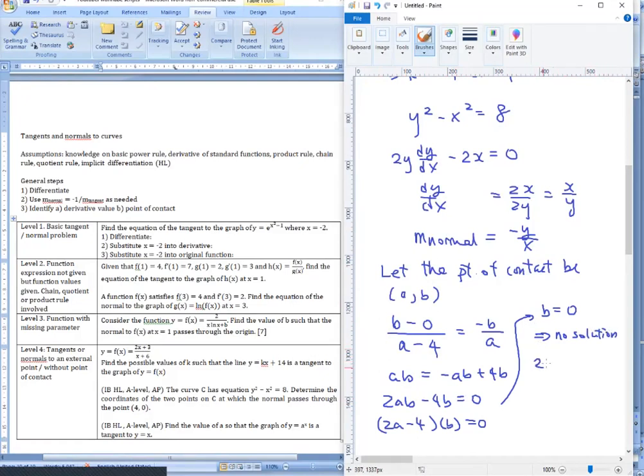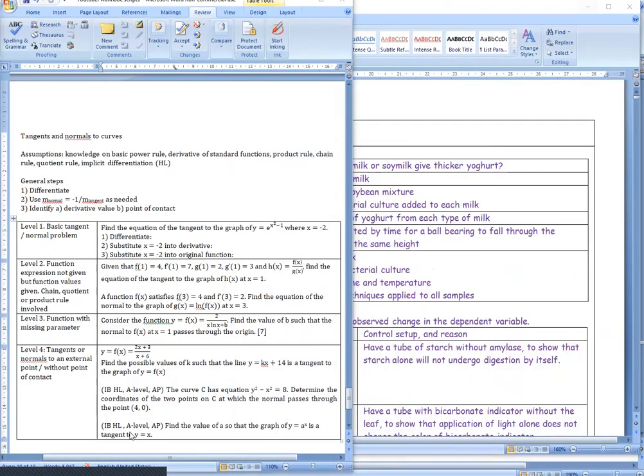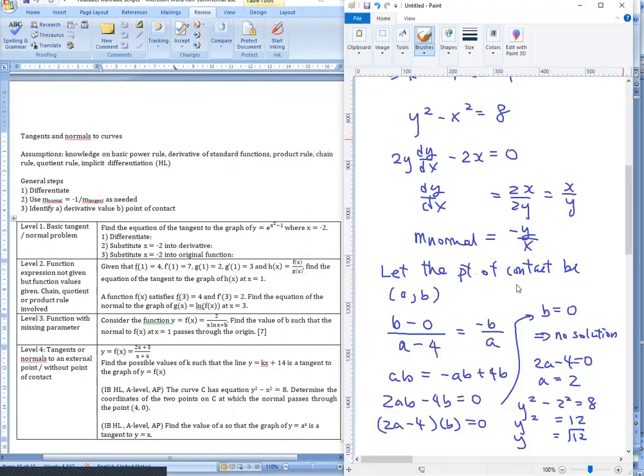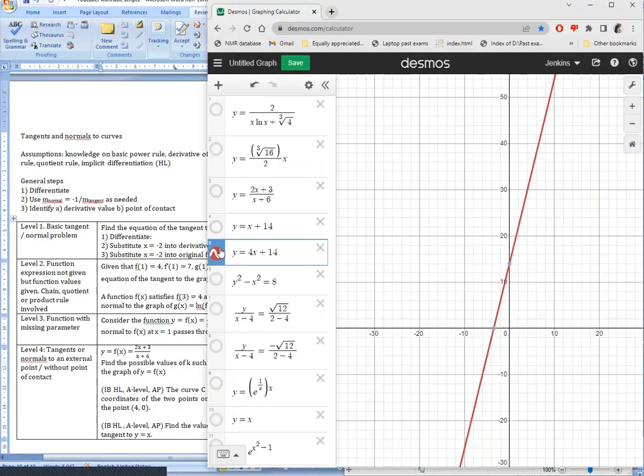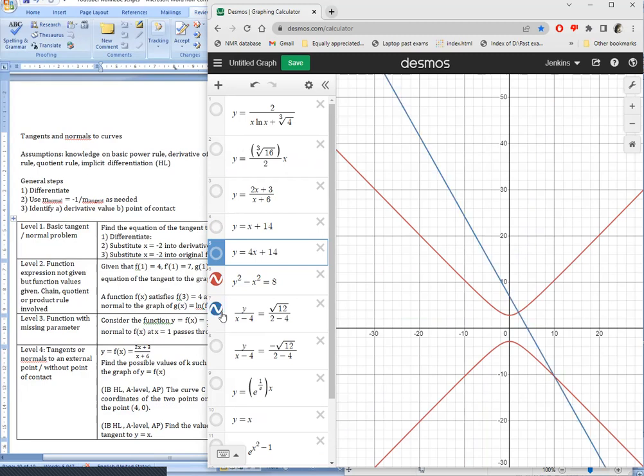However, when 2a minus 4 equals to 0, we have a equals to 2. And then we substitute this back into the original. y squared minus 2 squared equals to 8. y squared equals to 12. y equals to plus or minus root 12. Because there are two points of contact. And now I'm going to show you the Desmos result. So that's the curve. And then this negative gradient normal. And then a mirror reflection for the positive gradient normal.